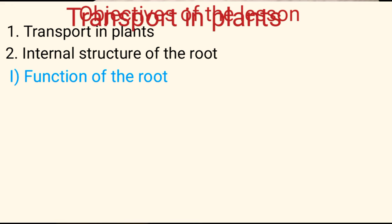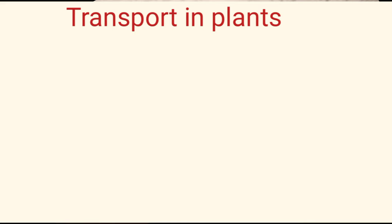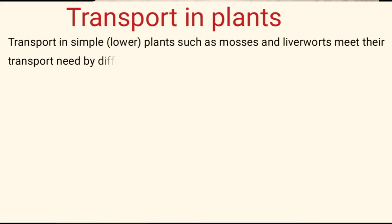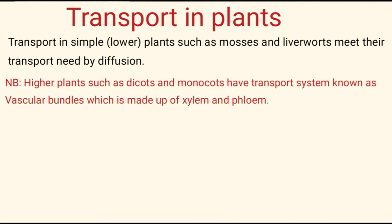To start with transport in plants: simple plants — that is, lower plants such as mosses and liverworts — meet their transport needs by simple diffusion. This is because lower organisms have a small body size and therefore a large surface area to volume ratio, meaning the rate of diffusion is high, and diffusion alone is sufficient for transportation of substances. But for higher plants such as dicots and monocots, because they have a large body size, diffusion alone is not sufficient, and so they have a transport system known as the vascular bundle.